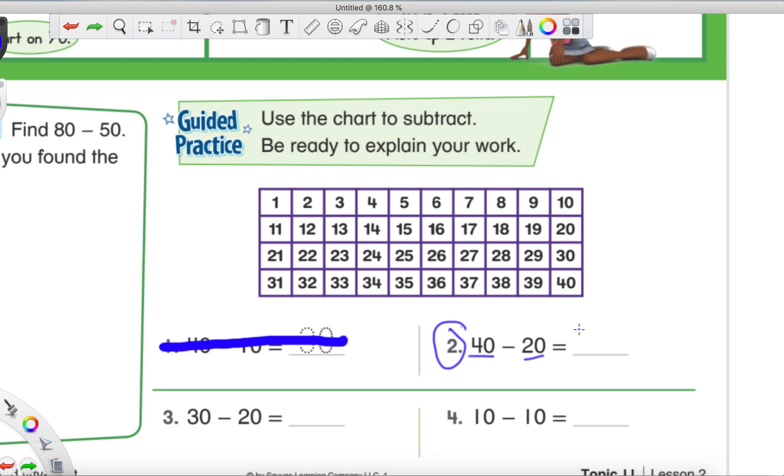All right. So that's how this chart can help us. And also that little trick about looking at the tens place. So I'm going to let you all try number three and four completely on your own. Go ahead. Give it a whirl. Try number three and four completely on your own.